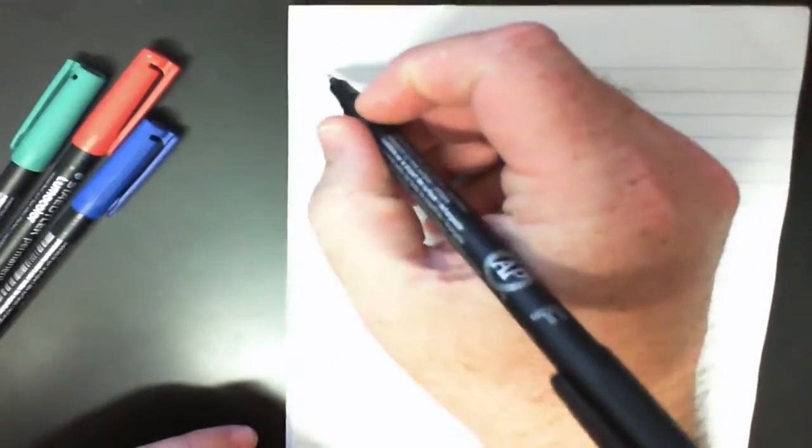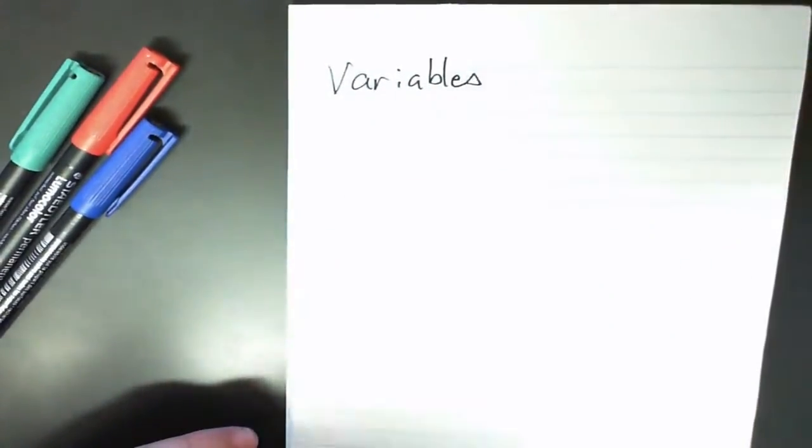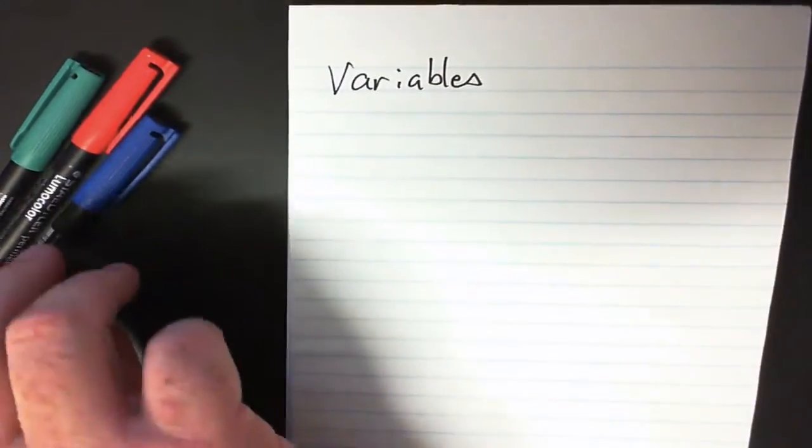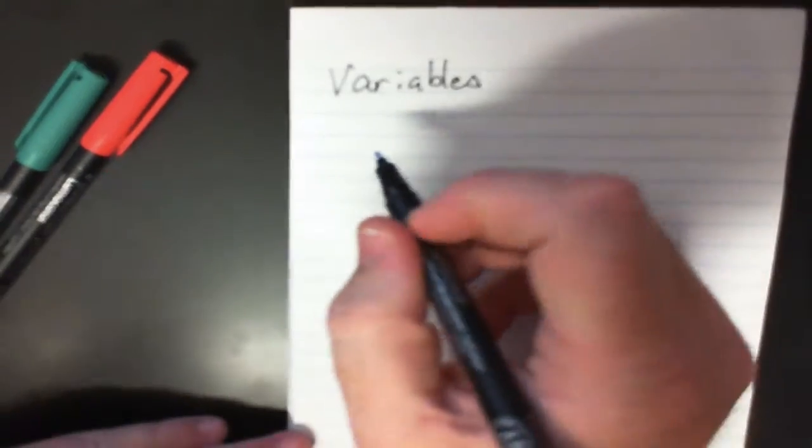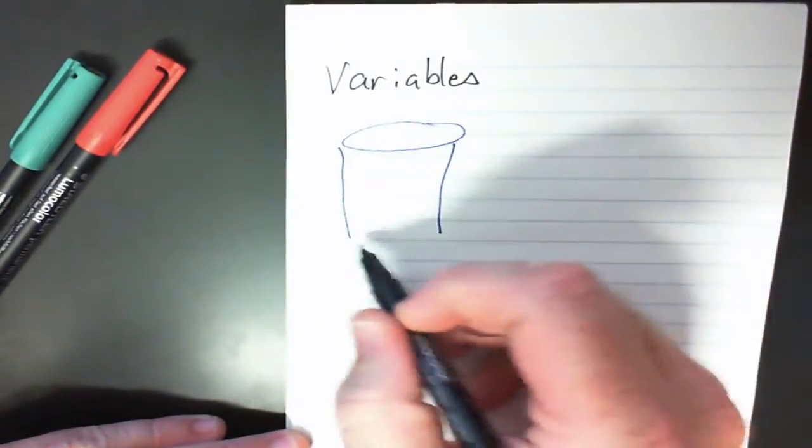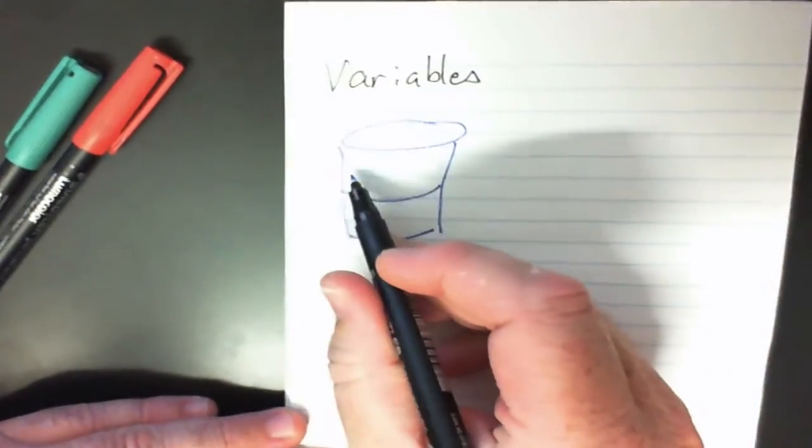In this session we're going to talk about variables. Variables are really important to programming. Variables are used to store information that the user may input into the system. I like to think of variables as if they are a bucket that forms a container that we can actually place information in. So here is my bucket.